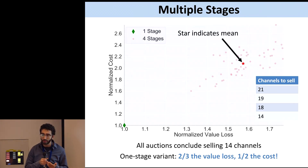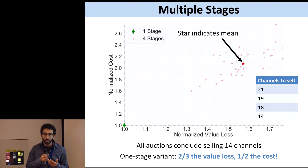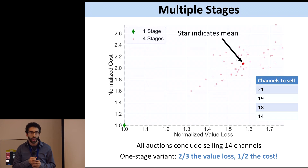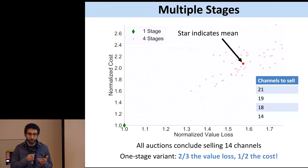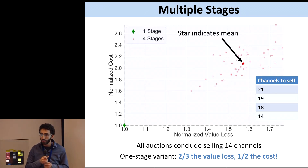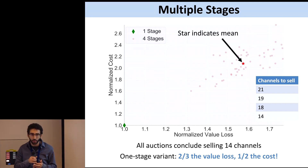Now let's see how this plays out in simulations. Each point on the graph is a simulation, scored by value loss on the x-axis and cost on the y-axis. I ran 50 value profiles through simulations running through four stages — what happened in the actual incentive auction (FCC tried 21 channels, then 19, then 18, then 14) — and compared to simulations that just started at 14 channels and ended immediately, normalized by the single-stage auctions. The auctions that ran through four stages experienced significantly higher value losses and cost — scoring worse on both metrics.